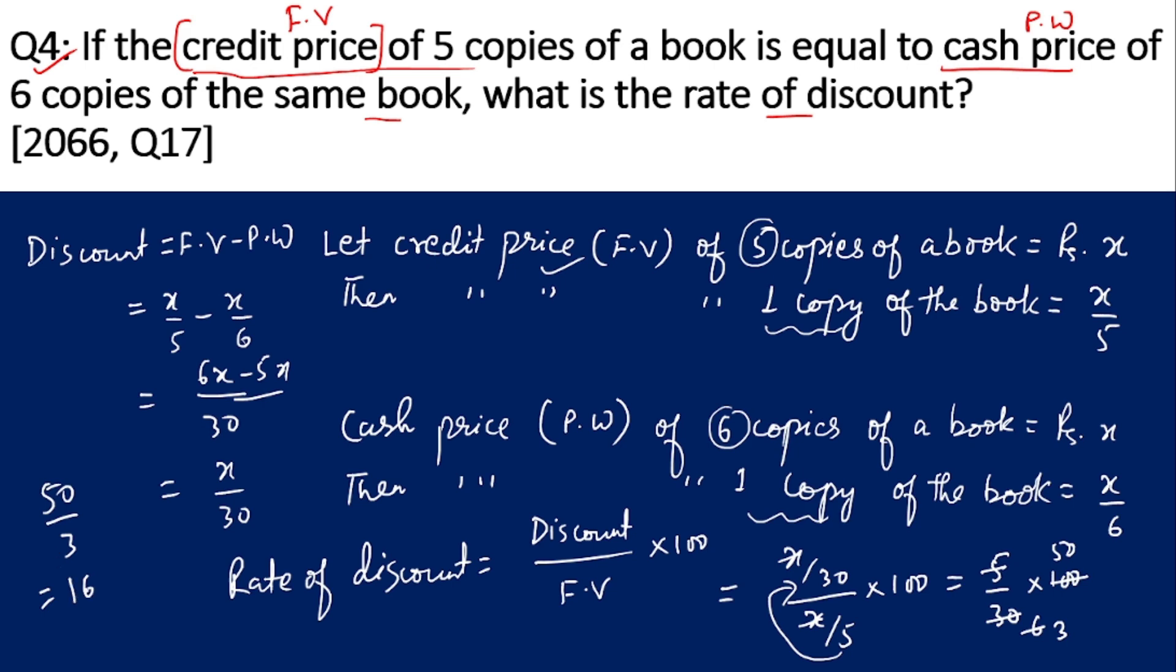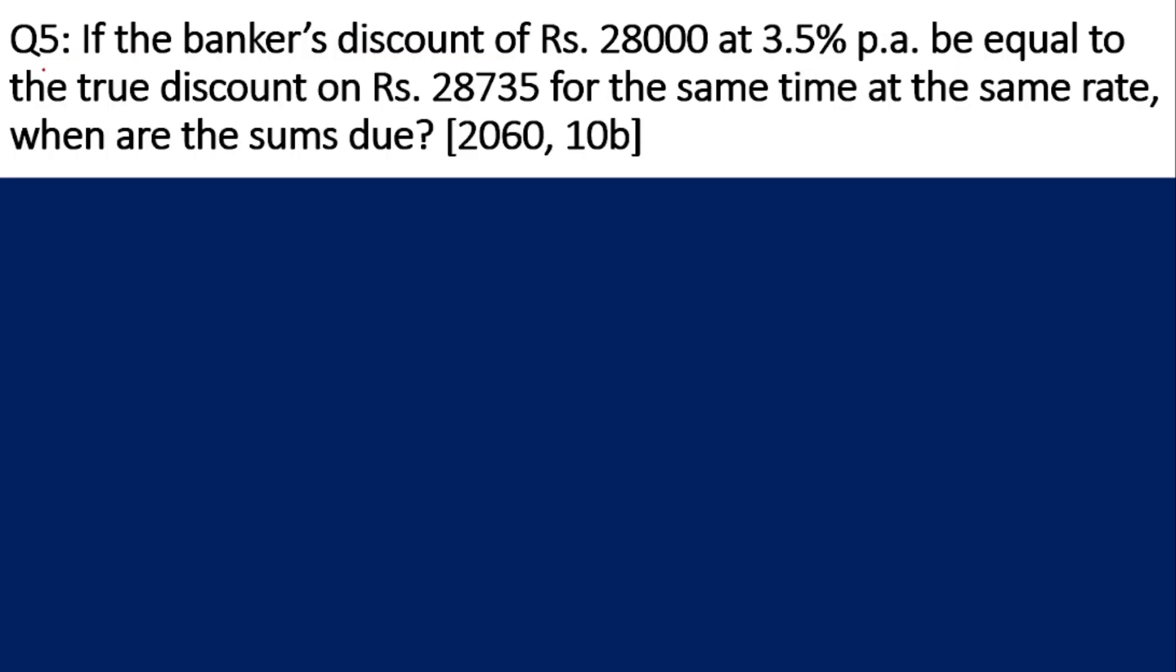Question 5: If the banker's discount of rupees 28,000 at 3.5% per annum be equal to the true discount on rupees 28,735 for the same time at the same rate, when are the sums due? This means we need to find the time. Two different face values are given: 28,000 is one FV, and 28,735 is another FV. The time is the same, rate is the same, only FV is different. And the banker's discount and true discount are equal.